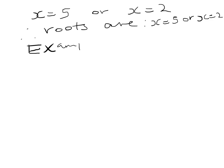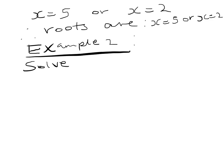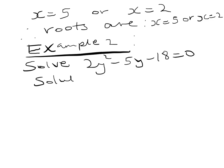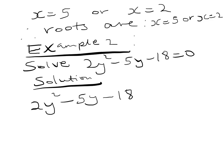Example 2. Solve 2y squared minus 5y minus 18 is equal to zero. Solution. We have in our equation 2y squared minus 5y minus 18 equals zero.